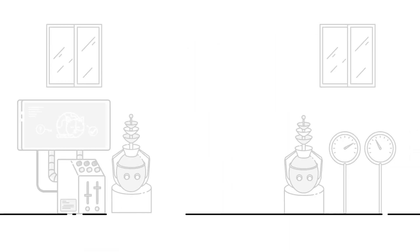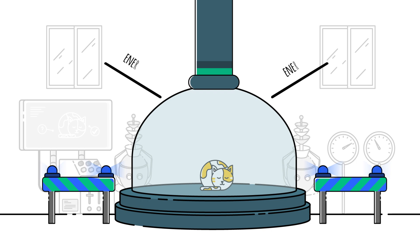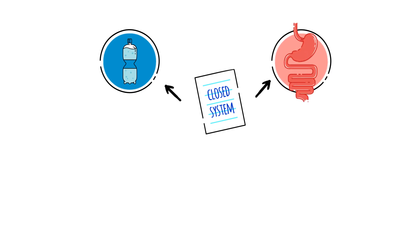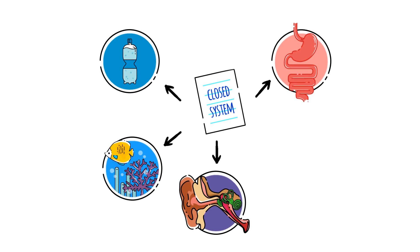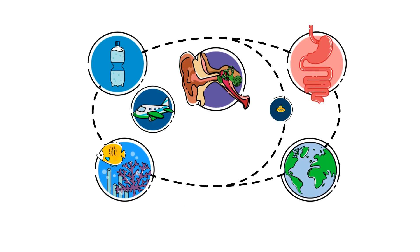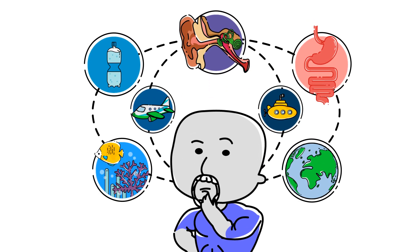In physics, it helps to think of what you're observing as being in its own enclosed space, sometimes referred to as a closed system. This closed system can be a water bottle, or the tube of the 30-foot-long digestive system — which starts at the oesophagus and ends at the anus — or the middle ear, which is separated from the outside by the eardrum and the eustachian tube, or underwater in a pool or ocean, or even the Earth as a whole.